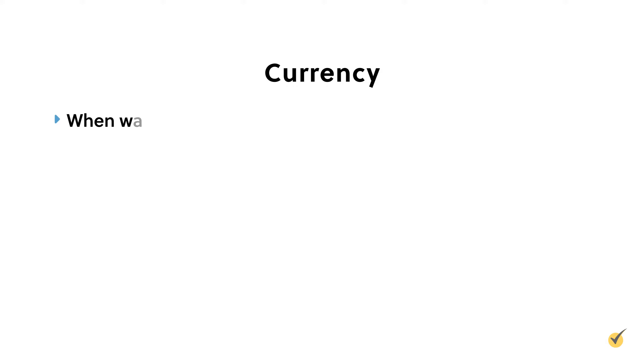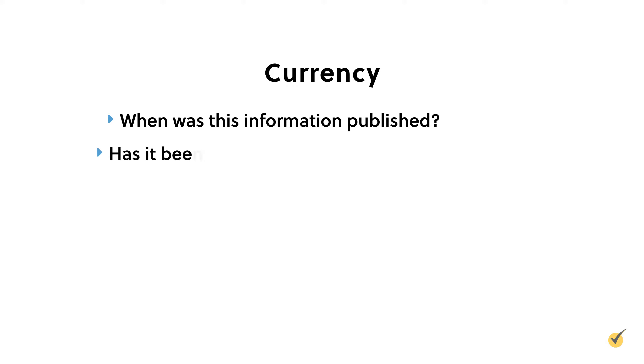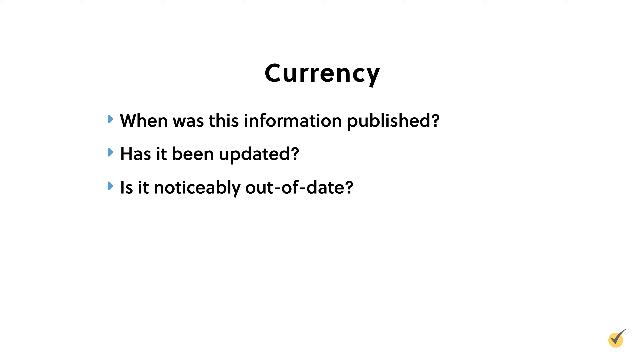The first thing you need to check is the currency of your source. This is more important if the topic you're writing about is current or quickly changing. If you're writing about the current structure of the internet, you probably shouldn't use information from the 90s as your main sources — the internet has changed drastically since then, and your writing will be dated. Questions to ask include: When was this information published? Has it been updated? And is it noticeably out of date? If your sources are talking about dial-up modems and floppy disks, maybe look for something else.